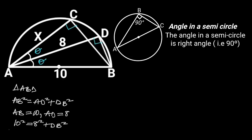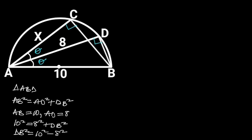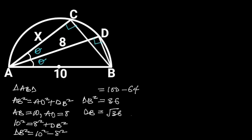If we make DB squared the subject of the formula, we have DB squared is equal to 10 squared minus 8 squared. 10 squared is 100, and 8 squared is 64. 100 minus 64 is equal to 36. So DB squared is equal to 36. Taking the square root of both sides gives us DB is equal to 6.